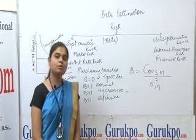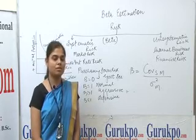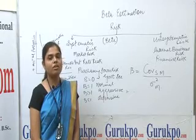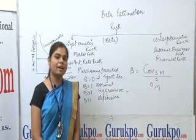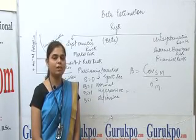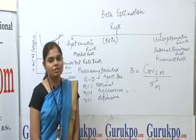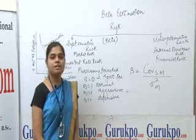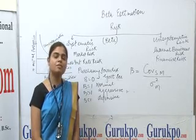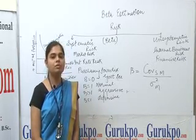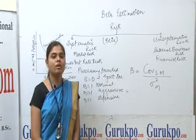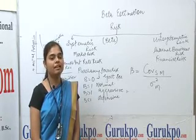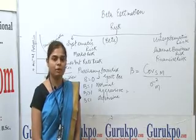Systematic risks are those risks which we cannot diversify. They remain in the portfolio and cannot be eliminated because they arise due to changes in economical, political, and social conditions. Unsystematic risk, on the other hand, is a specific or unique risk that arises within the organization, and we can eliminate this risk from our portfolios.